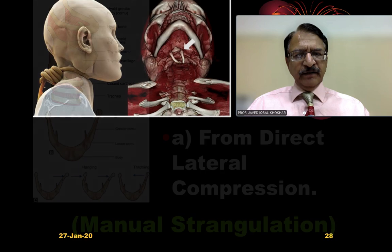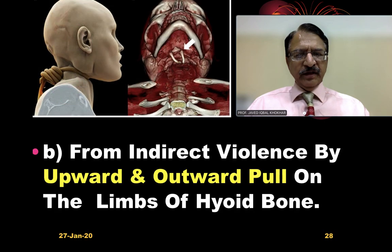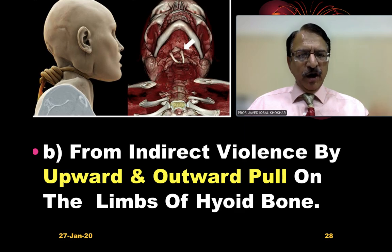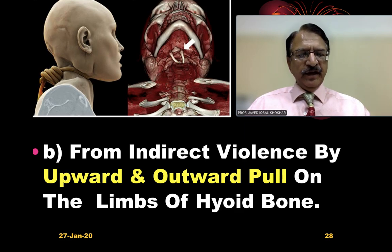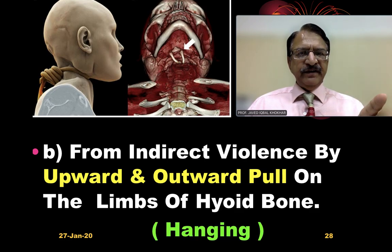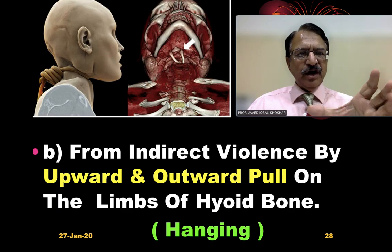The second mechanism involves indirect pull upward and outward on the limbs of the hyoid bone, and this happens in hanging. In this case, the fracture segment will be displaced outward.